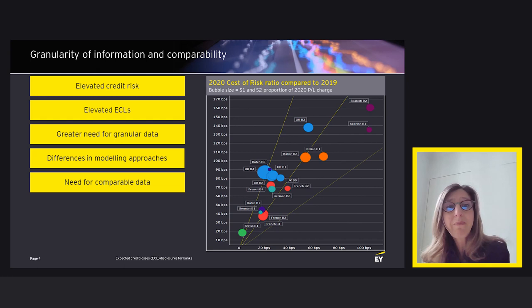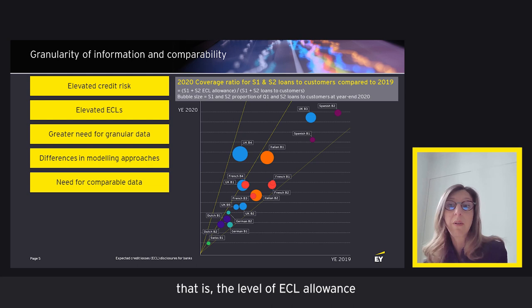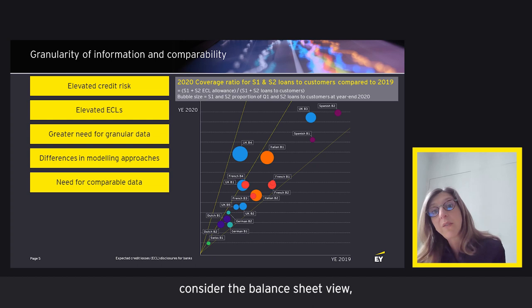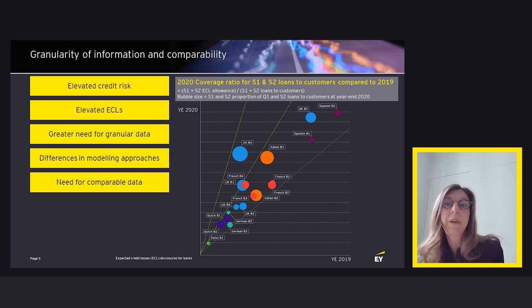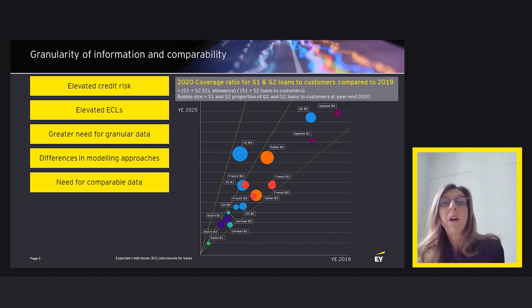The second key indicator is coverage ratios — the level of ECL allowance divided by gross loans. Cost of risk shows the dynamic for the year, but you also need to consider the balance sheet view. We made a further split between non-performing loans — credit-impaired loans under IFRS 9 — which have high coverage ratios, and performing loans, that is stage 1 and 2, for which levels are a lot smaller.